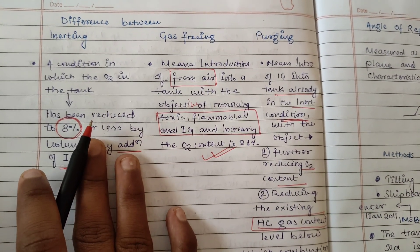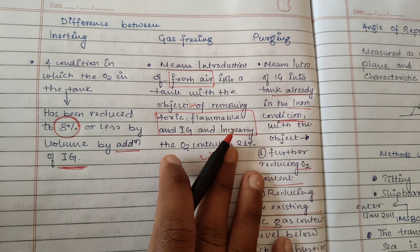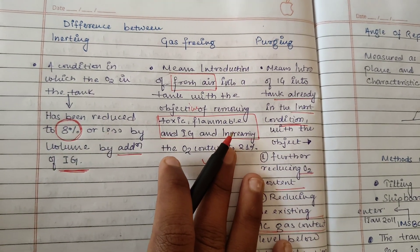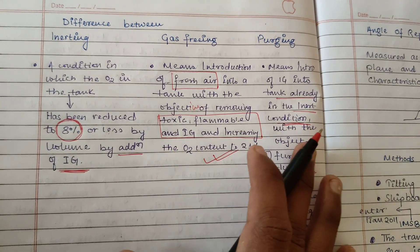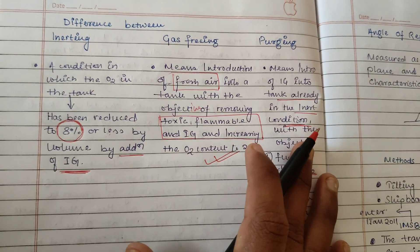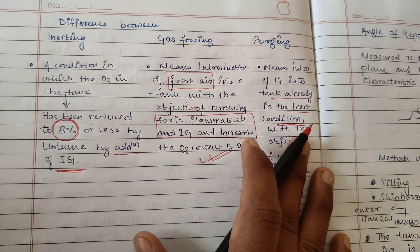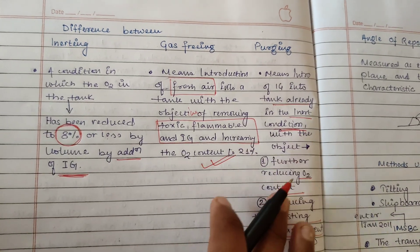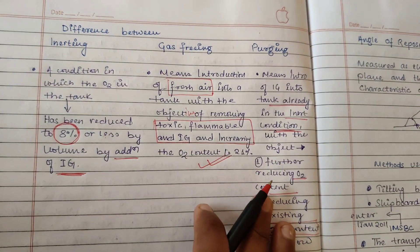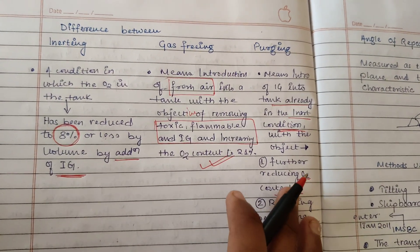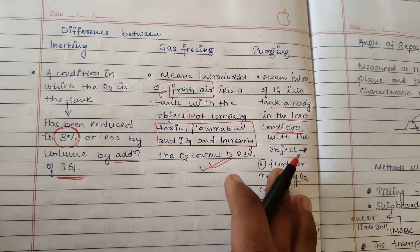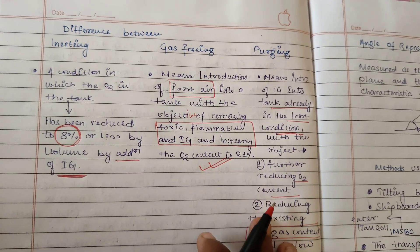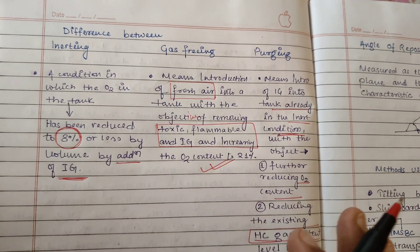So this is the basic difference between inerting, gas freeing, and purging. Inerting means the introduction of inert gas to reduce oxygen content. Gas freeing means the introduction of fresh air to reduce inert gas or flammable gases. Purging means our tank is already inerted but we need to reduce oxygen content further, so we introduce inert gas. I hope you liked it, thank you.